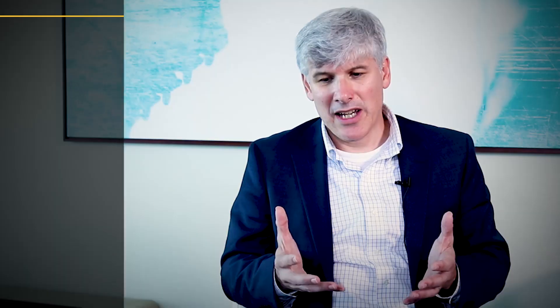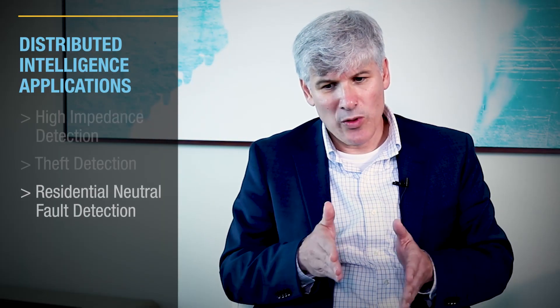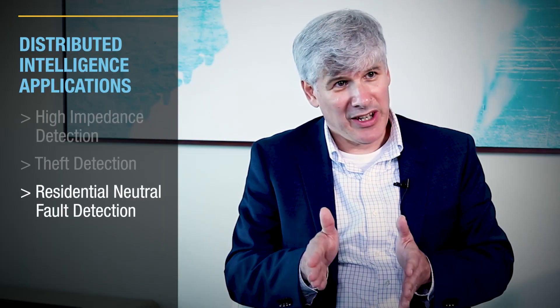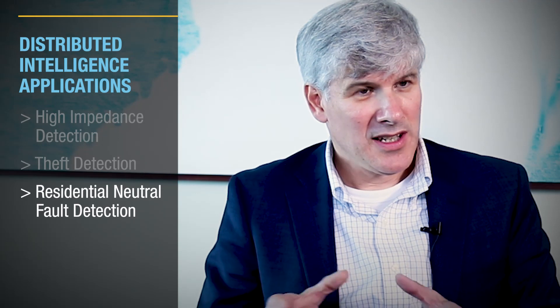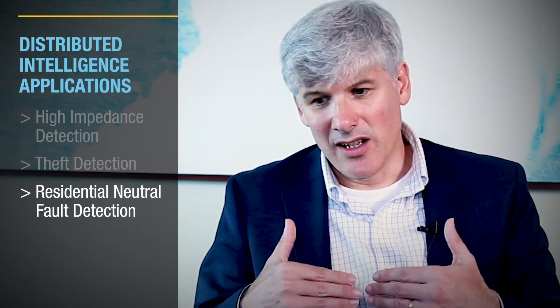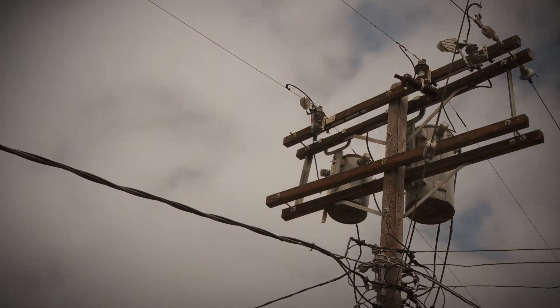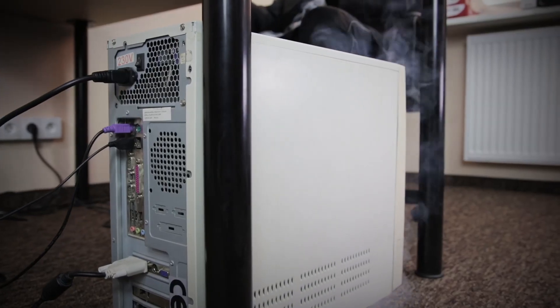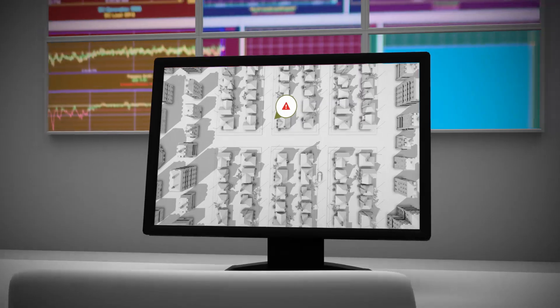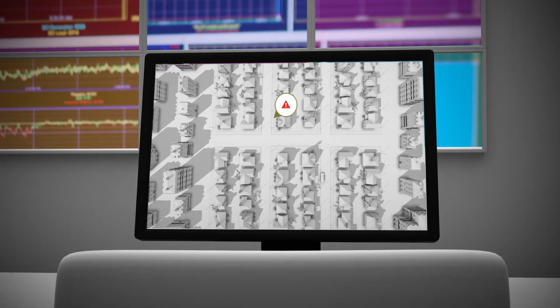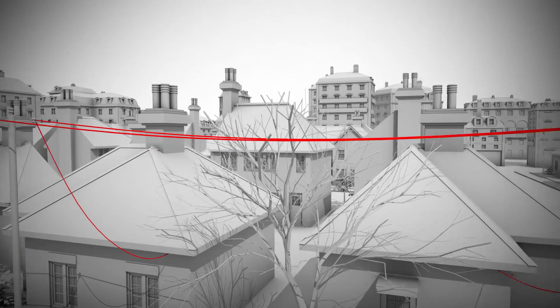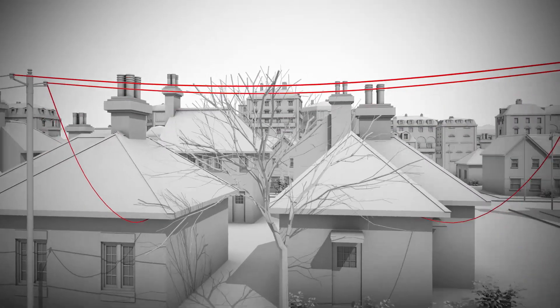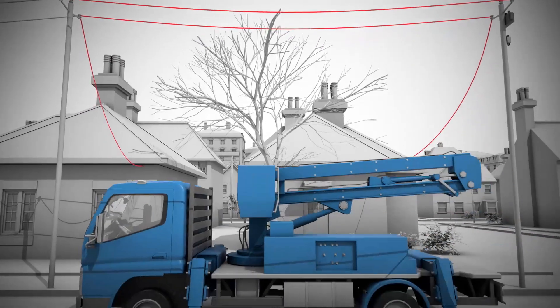A third application we have is detecting when the neutral is severed to the customer. Today in residential services, we don't have a way of detecting that. And when that occurs, we have voltage swings in the premise, damage to equipment, and safety issues. Now with distributed intelligence, we can detect that the moment it occurs and allow utilities to respond immediately.